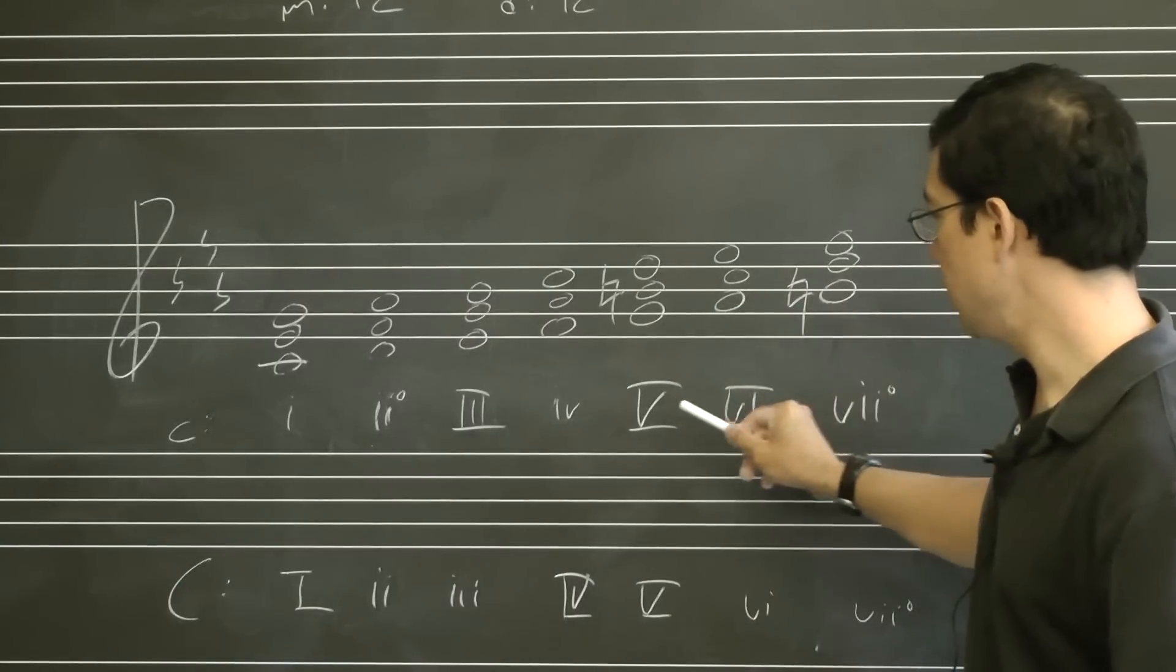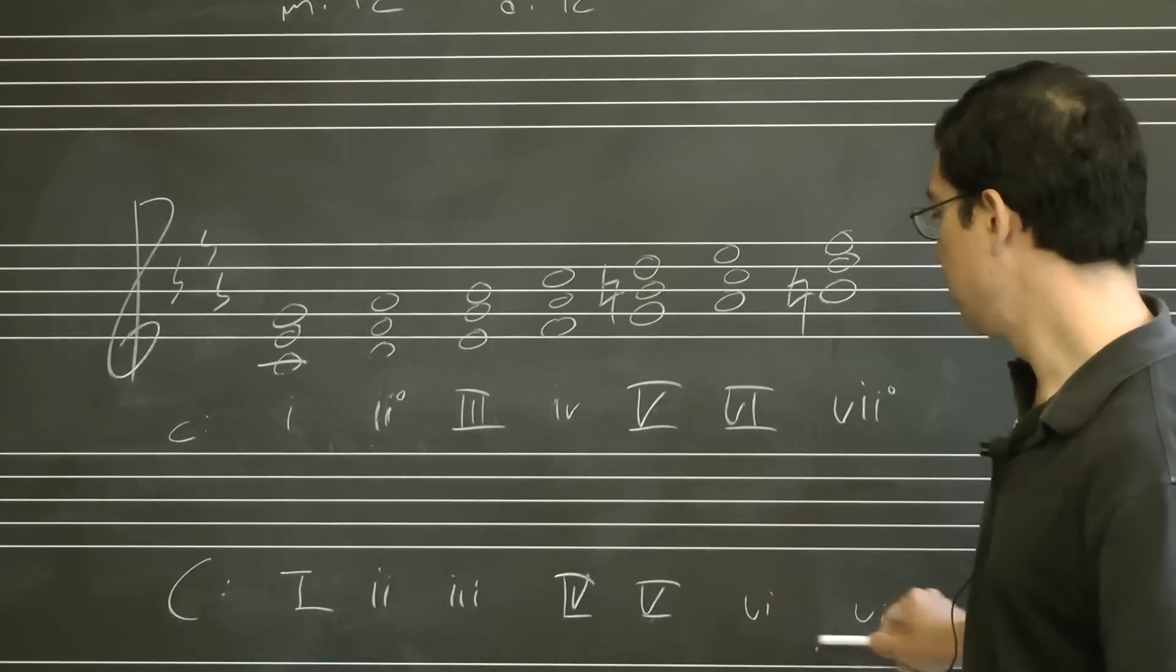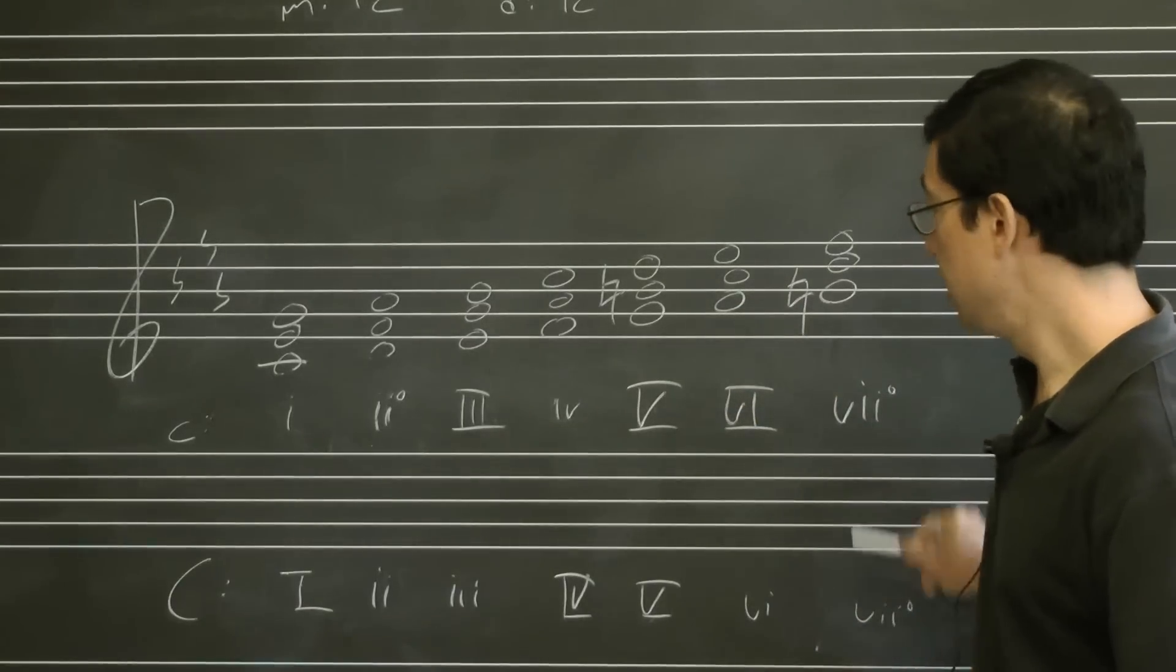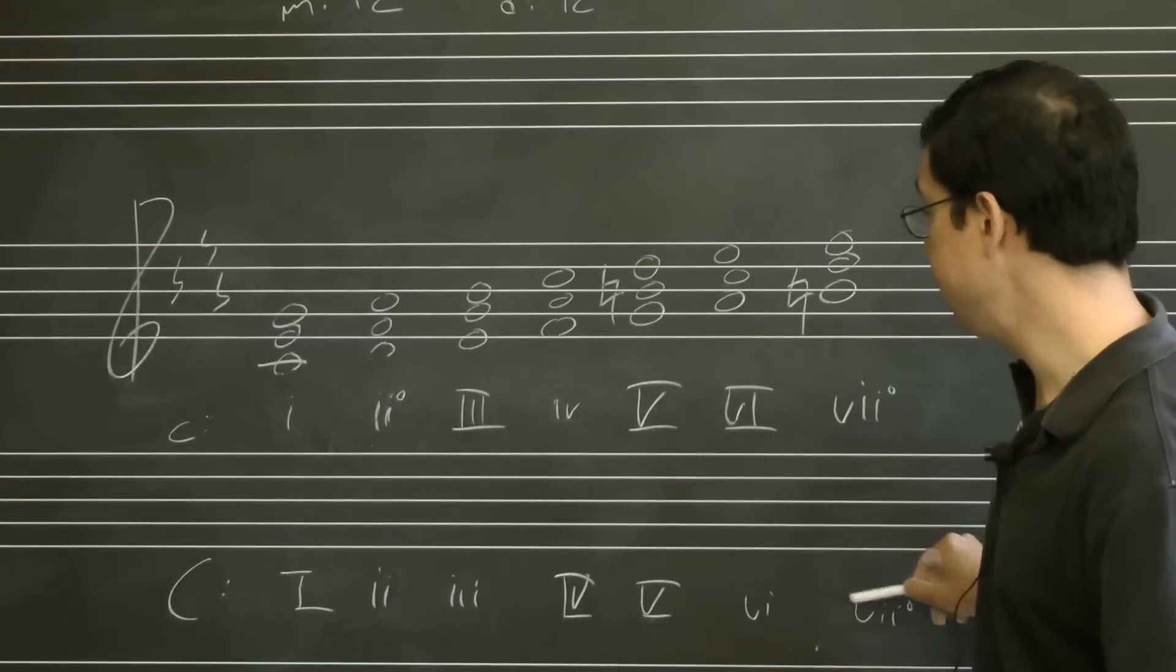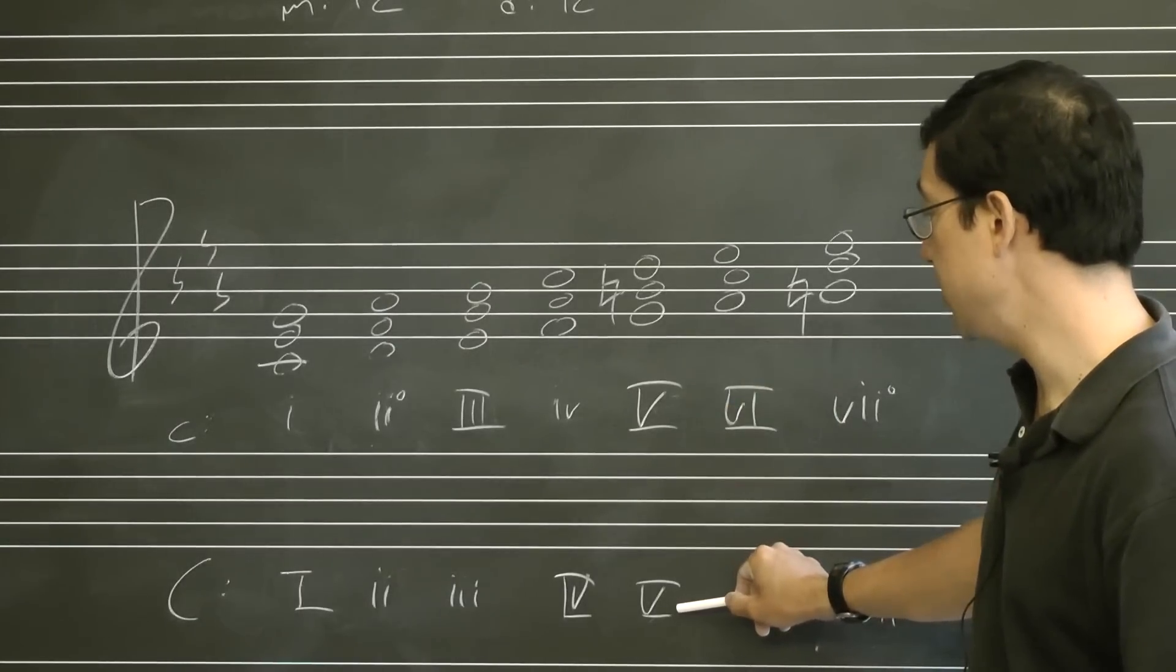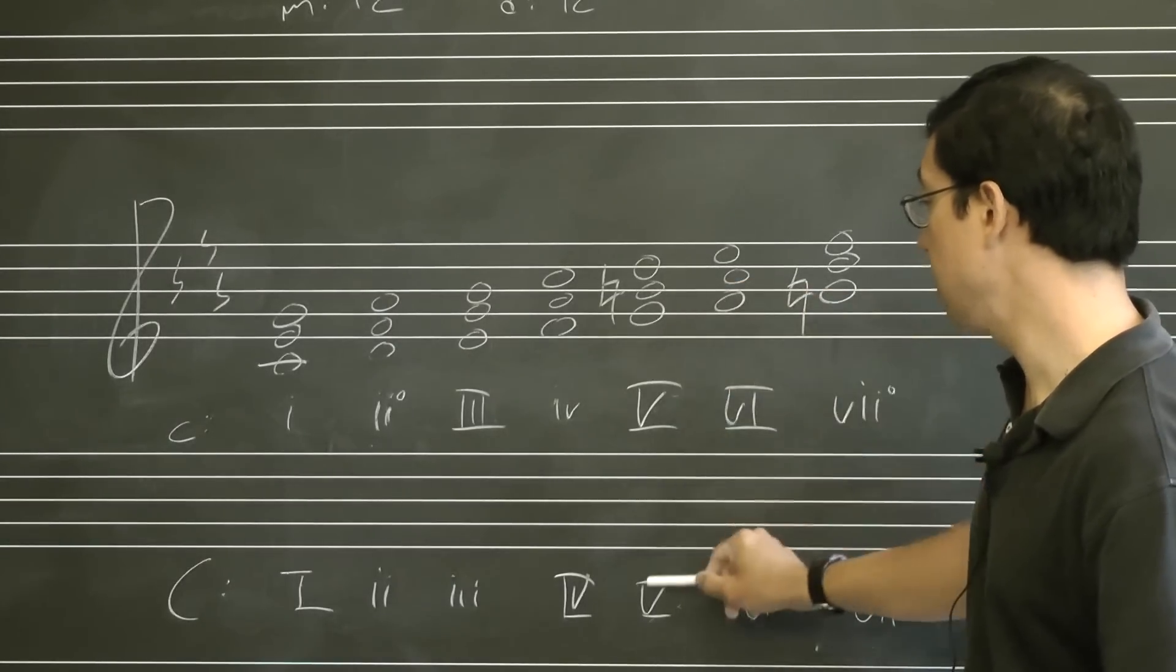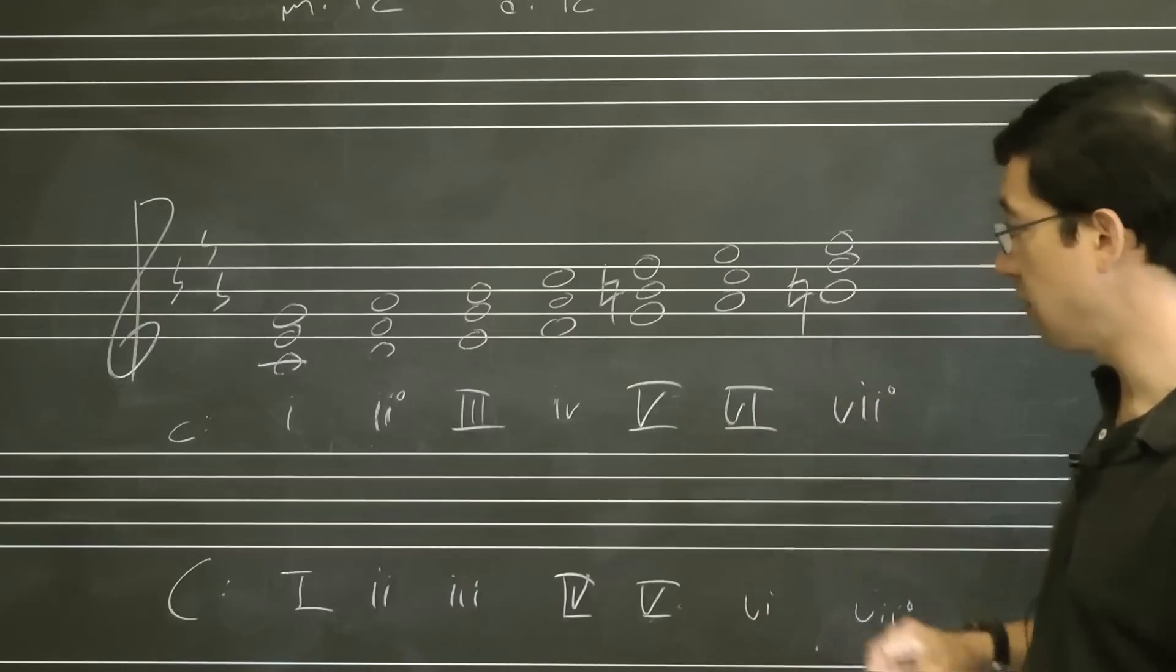We use this leading tone to imitate the chord qualities that we have in major. This would have been a major chord, we want it to be diminished. This would have been a minor chord, we want it to be major. So we're imitating our major chord qualities. That's the first thing I want you to observe.